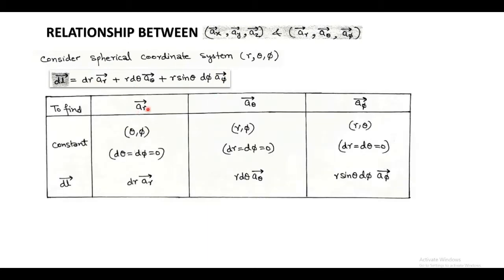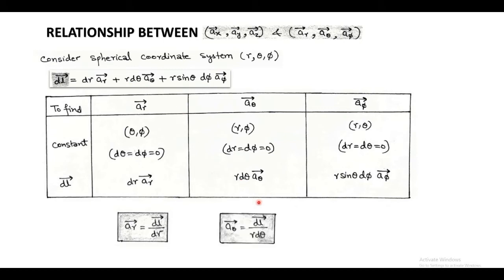First, we have to find unit vector r. Here, we consider theta and phi as constant, which results d theta equals to d phi equals to 0. After putting d theta and d phi equals to 0 in the differential length equation, we get dl vector equals to dr unit vector r. So, unit vector r becomes dl vector upon dr. Next, to find unit vector phi, we consider r and theta as constant, which results dr and d theta equals to 0. So, dl vector becomes r sin theta d phi unit vector phi, and after rearrangement, unit vector phi equals to dl vector upon r sin theta d phi.